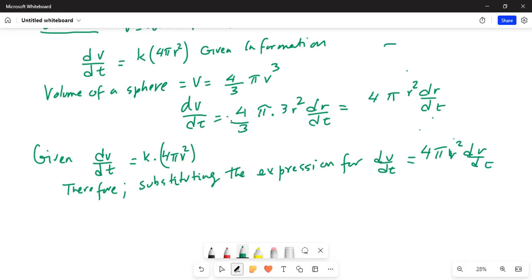4πr² dr/dt. So, therefore, dV/dt is 4πr² dr/dt. And that is equal to k multiplied by 4πr². Okay. And that comes from the given information. This is given information from the problem statement. So, now we can show if we divide by 4πr² on both sides.